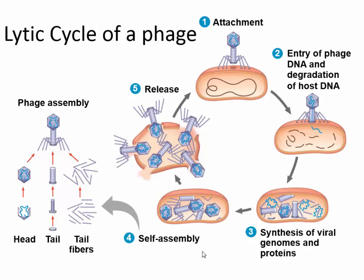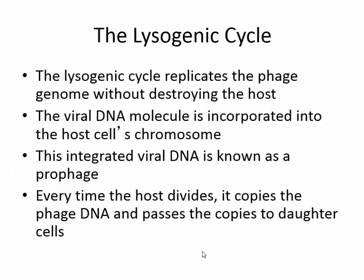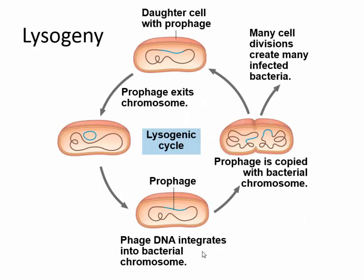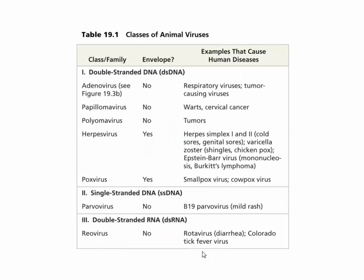The lysogenic cycle is not so drastic — it replicates the phage genome without destroying the host. The viral DNA molecule is incorporated into the host cell's chromosome; this integrated viral DNA is known as a prophage. Every time the host cell divides, it copies the phage DNA and passes copies to daughter cells. In the diagram, the tiny blue strand represents the viral DNA added onto the bacterial DNA, which just keeps getting copied.